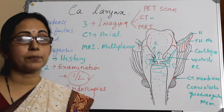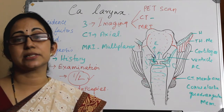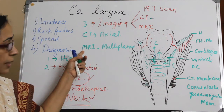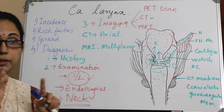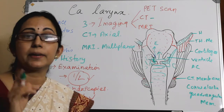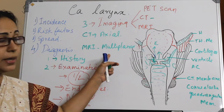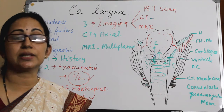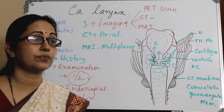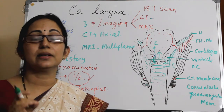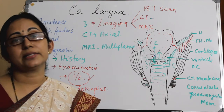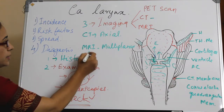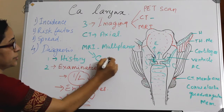Subglottic extension is better seen with CT scan. MRI is usually complementary, but MRI with multi-planar cuts is superior to CT for locating cartilage invasion or cartilage erosion. So MRI is mainly indicated for cartilage erosion assessment.